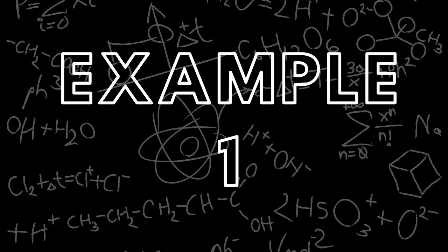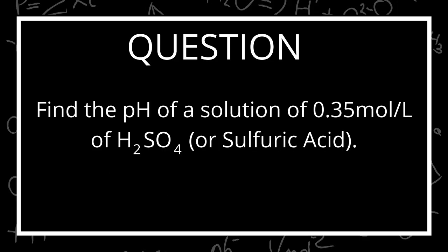This is one of those videos where I am just going to dive right in and do the questions. Here we go. Find the pH of a solution of 0.35 moles per liter of H2SO4 or sulfuric acid. So the first thing we have to do is figure out how H2SO4 is going to dissolve in a solution.